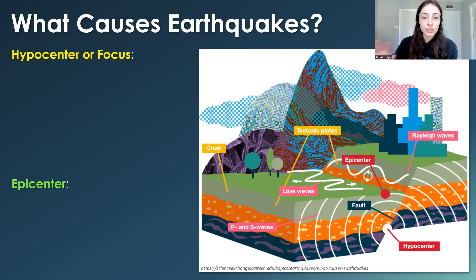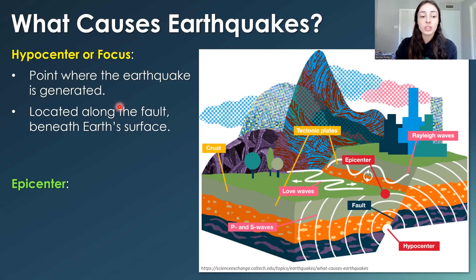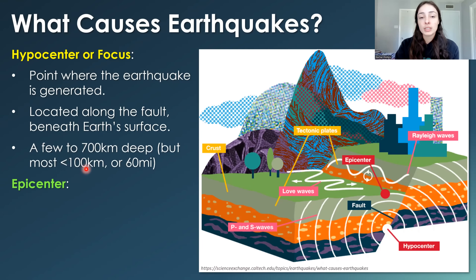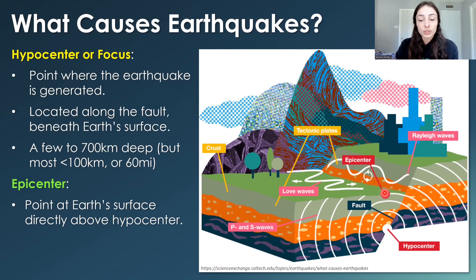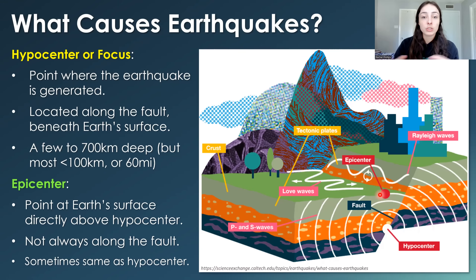Some brief terminology: the hypocenter or focus of the earthquake is the point where the earthquake is generated, located along the fault, which can be beneath Earth's surface but most earthquakes have hypocenters less than 100 kilometers deep. The epicenter is the point at Earth's surface directly above the hypocenter. From the hypocenter, seismic waves propagate out in all directions through the rock layers, and from the epicenter they propagate along the surface — we feel all of these waves when we feel earthquakes.